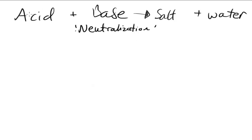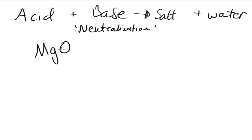There are a couple of different types of bases you may come across. The first type of base is a metal oxide. This may be something like MgO — magnesium oxide. When you react this magnesium oxide with an acid, it produces a magnesium salt and water.